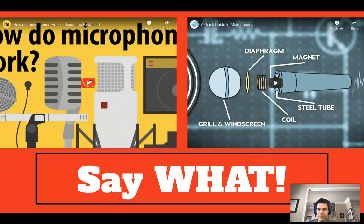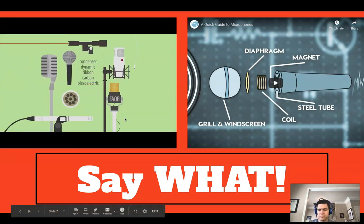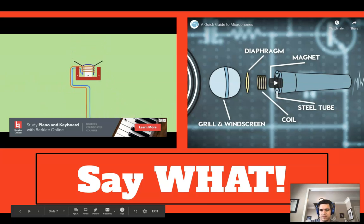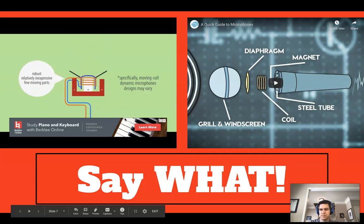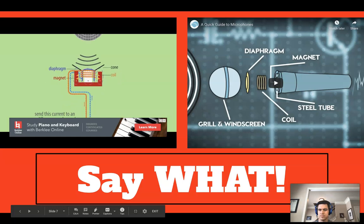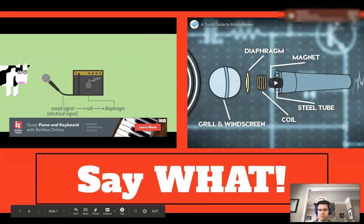How do microphones work? Though they have differences and different uses, they are all transducers converting sound waves to an electrical signal. The dynamic microphone is the most common. Sound waves hit a thin diaphragm, which causes it to move. This diaphragm is attached to a coil surrounded by a magnet. The coil's movement past the magnet creates an electrical current — that is your sound signal. Loudspeakers work in reverse: the incoming sound signal moves the coil, which in turn moves the diaphragm, creating sound waves.